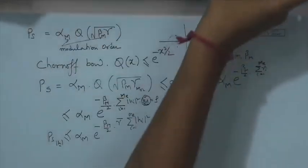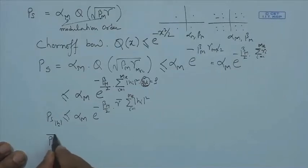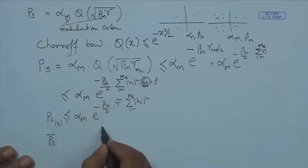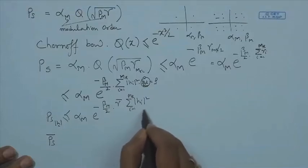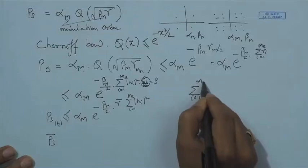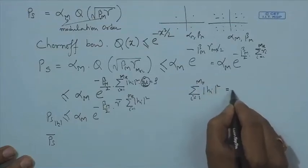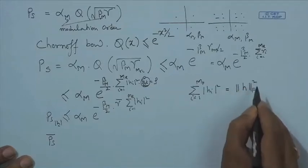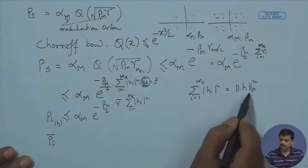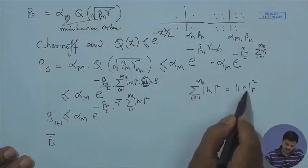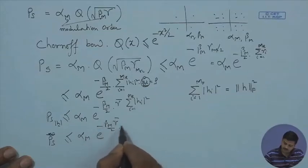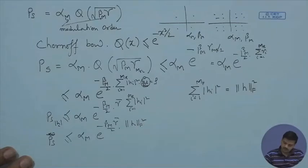What we are interested in finding is P_s bar (average symbol error probability). To find it we take the expectation over H. The sum from i equals 1 to MR of |H_i|² for MRC can be written as ||H||_F² — the Frobenius norm of H — since it contains the sum of squares of all channel coefficients. So P_s ≤ alpha_m × e^(−(beta_m × gamma_bar / 2) × ||H||_F²), which is very convenient for taking the expectation.